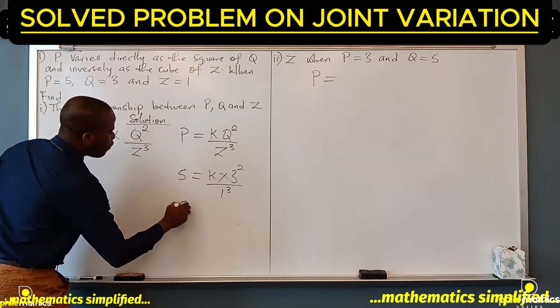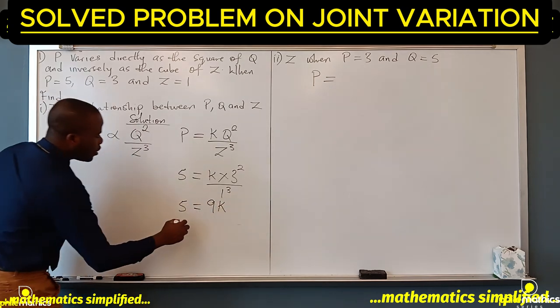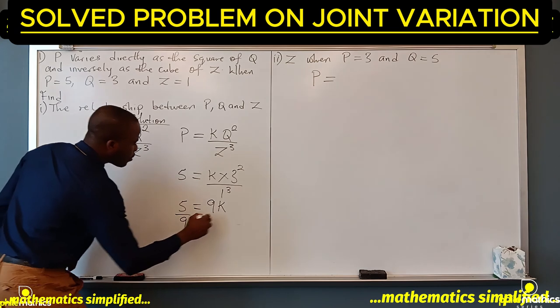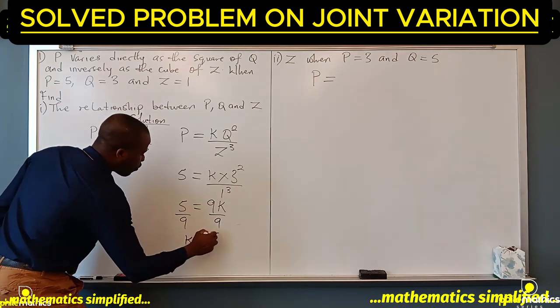3 squared, and z is 1 cubed. 1 cubed is 1, and so we have 5 equals 9k. To find what k is, we divide both sides by 9.